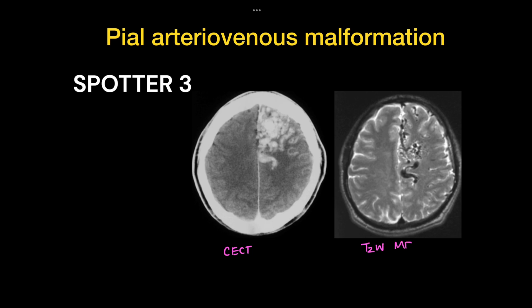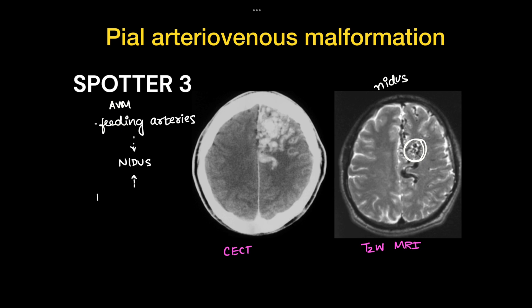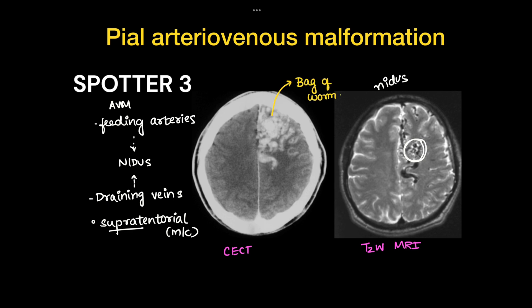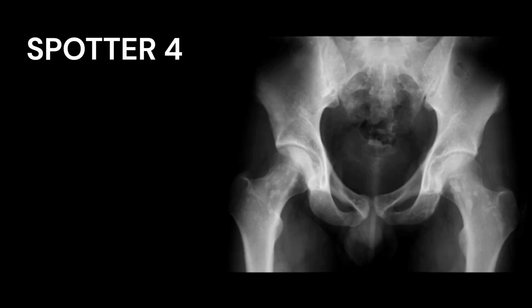Case 3 is arteriovenous malformation. We have CECT and T2-weighted MRI. On T2-weighted MRI we can see a nidus of vessels. It is an AVM having feeding arteries, a nidus, and a draining vein. The most common location is supratentorial. On CECT it shows a bag of worms appearance.